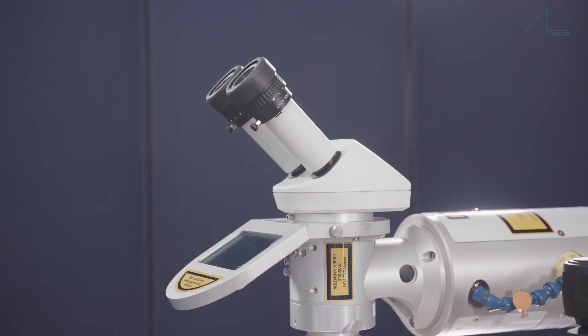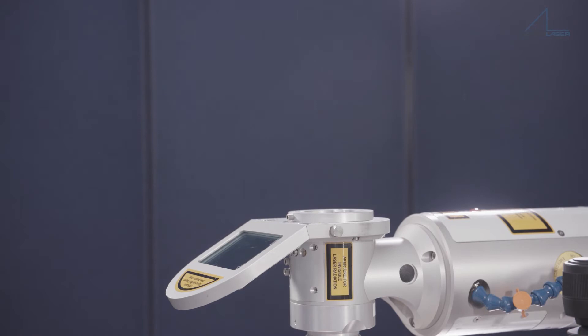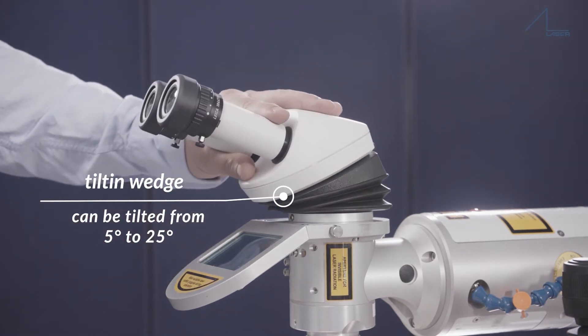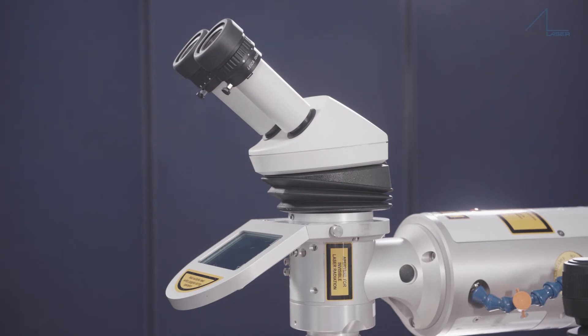Let us talk about the options. A tilting wedge for the microscope ensures an ergonomic working position for the operator. The binocular can be tilted from 5 to 25 degrees.